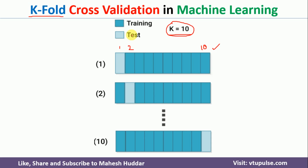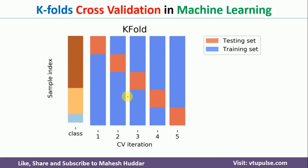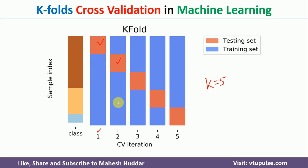To understand k-fold cross-validation further, let's take another example where k is equal to 5, meaning we divide the data into 5 folds. In each iteration, we take 1 fold for testing and the remaining 4 folds for training. In the first iteration, the first fold is used for testing and the remaining 4 folds for training. In the second iteration, the second fold is used for testing and the remaining 4 folds for training, and so on.